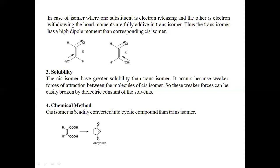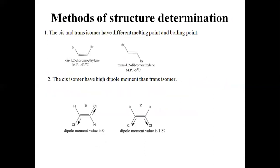The next method is the chemical method. On the basis of chemical reactions, the cis isomer is readily converted into a cyclic compound, whereas the trans isomer is not. In the cis isomer, the same groups are on the same side, so they can easily undergo cyclization to form a cyclic molecule. In the trans isomer, the same groups are on opposite sides, so cyclization does not readily occur. Therefore, the cis isomer is readily converted into a cyclic compound while the trans isomer does not convert into a cyclic compound.